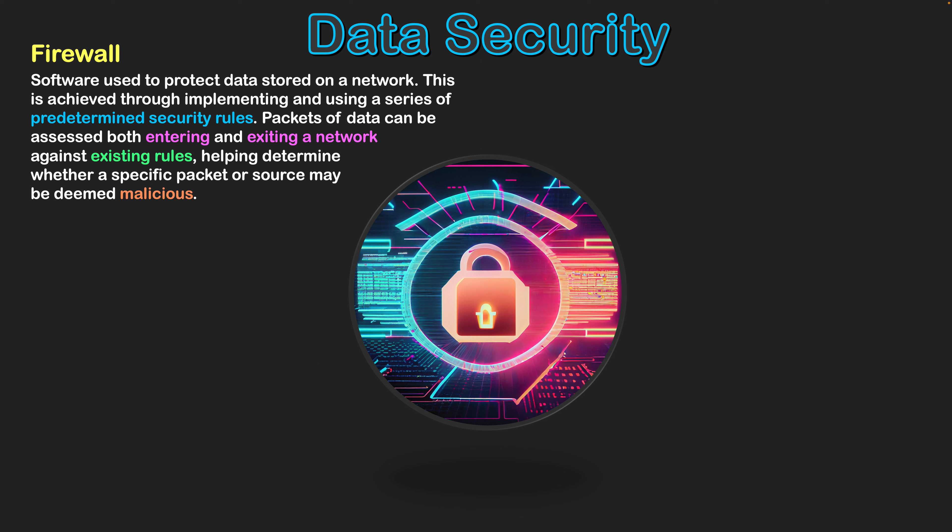A firewall is software used to protect data that is stored on a network. This is achieved through implementing a series of predetermined security rules. These rules might look at IP addresses, see where the data is coming from, or look at a verified username associated with the sending of that data. If those rules aren't followed, that data can't come into the network. Packets of data are assessed both entering and exiting the network.